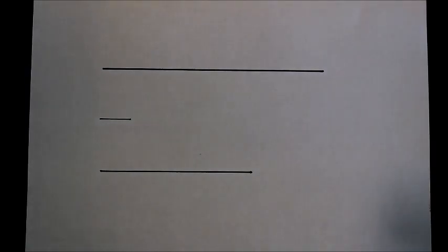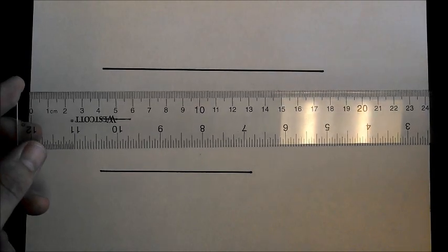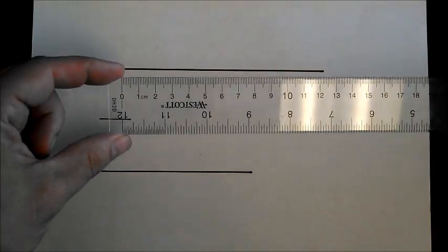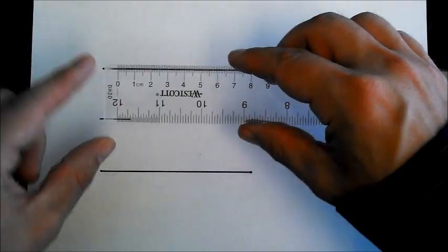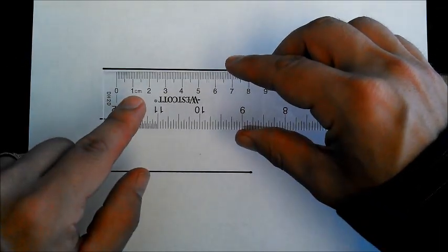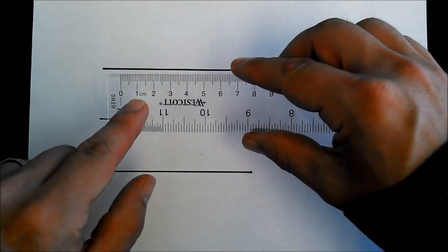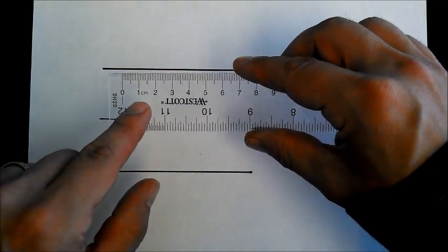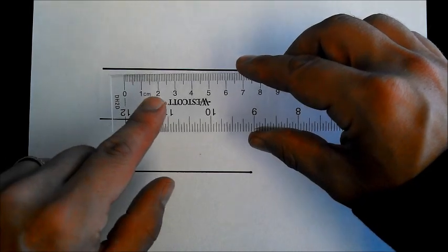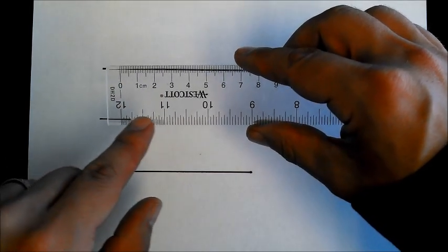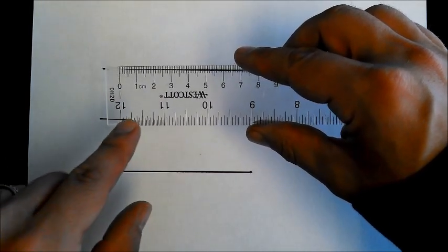To start off with, you need to make sure you have a metric ruler. Most rulers you'll find have both metric centimeters as well as inches. You can tell centimeters and inches apart because centimeters are smaller and inches are a lot bigger, and the graduations are a little different.